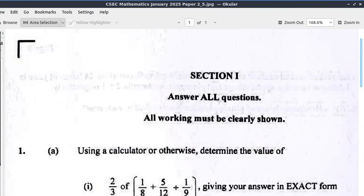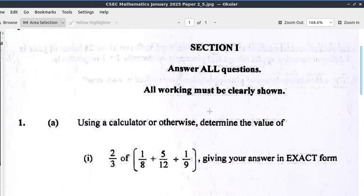Here we have the CSEC Mathematics January 2025 paper. Question 1A says, using a calculator or otherwise, determine the value of 2 thirds of 1 eighth plus 5 twelfths divided by 1 ninth, giving your answer in exact form.